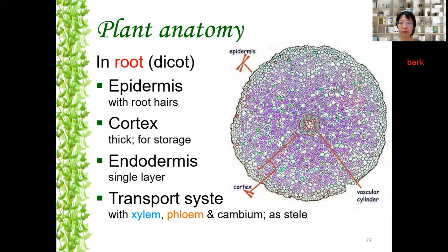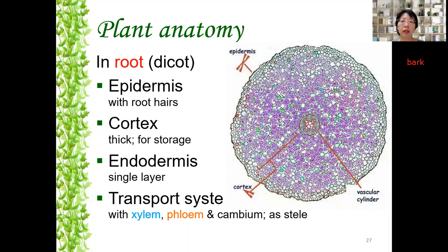This is a micrograph of a root. The epidermis is a tissue made up of sometimes one, two, or three layers of cells in the outer region. Then the cortex — the cells are irregularly shaped, quite big. Inside the cells you can see a lot of purple-colored structures, which are starch grains stored inside the parenchyma cells. Parenchyma cells are irregularly shaped, quite big, used for packing purposes, filling up space, and in this case storing starch. Right in the center is the stele, where the xylem is a four-pointed star and surrounding it is the phloem.